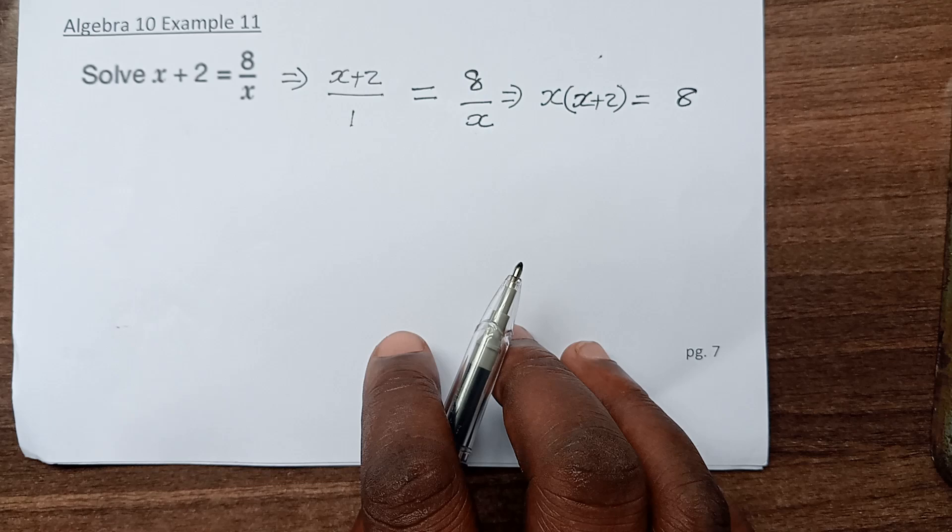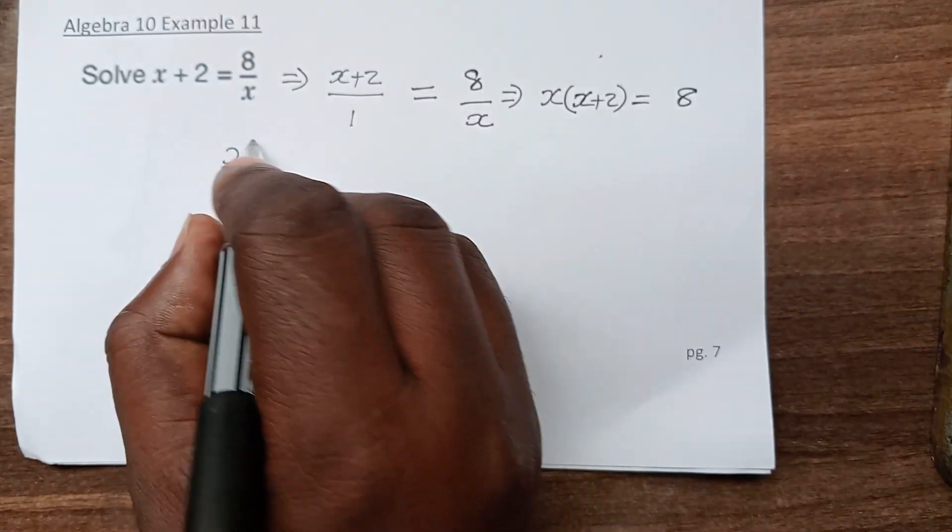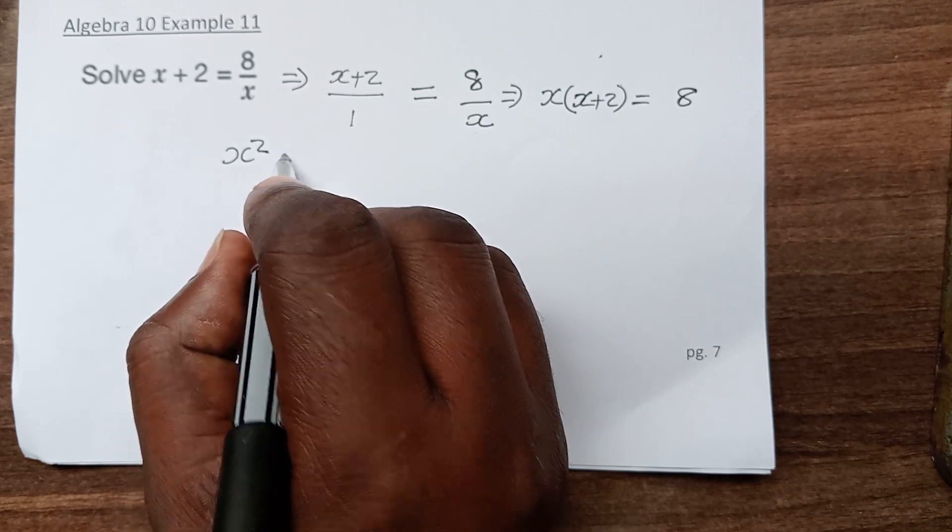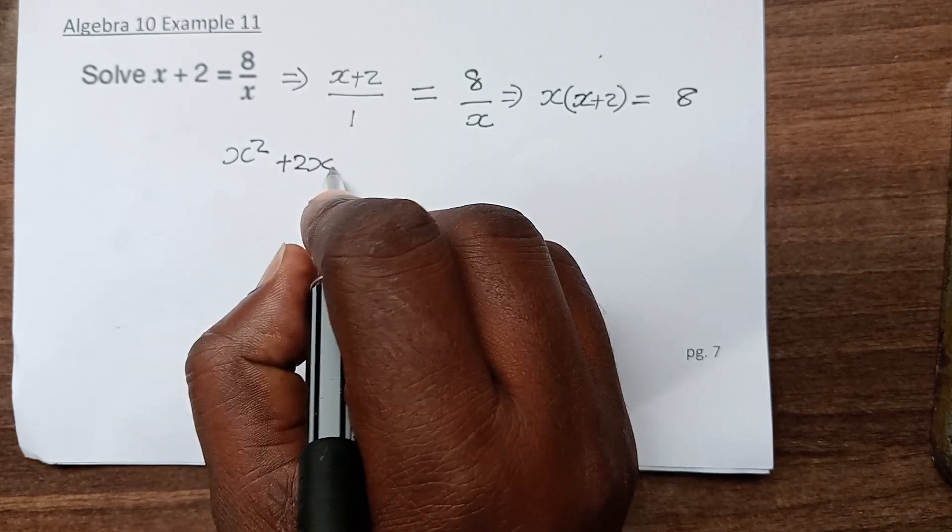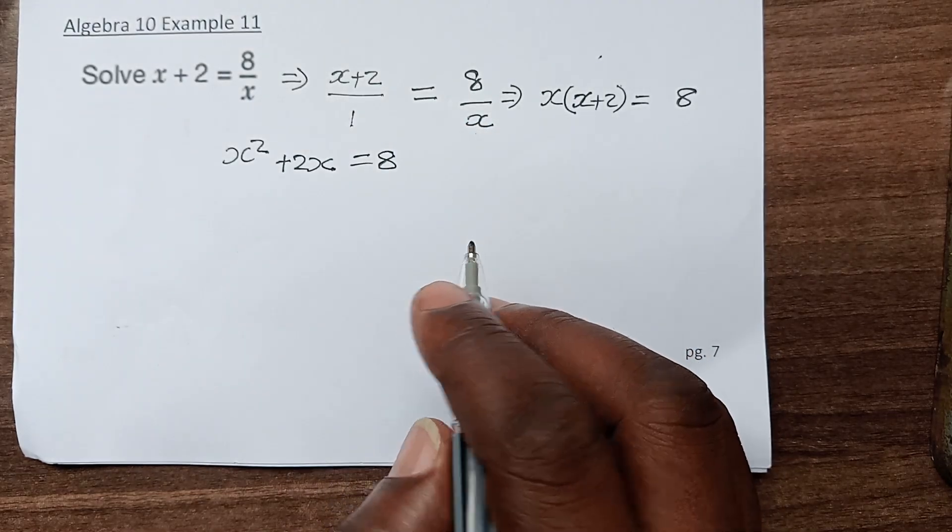At that point, we open up this bracket to give us x squared plus 2x, which equals 8. This is going to be a quadratic equation.